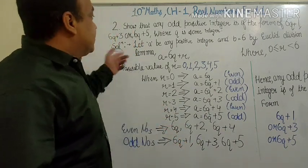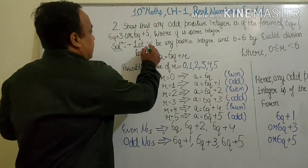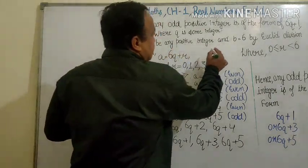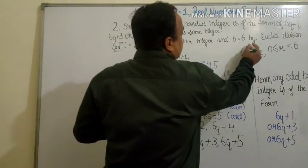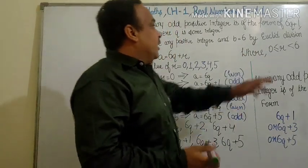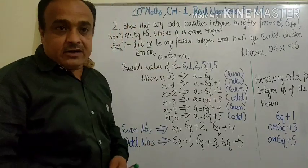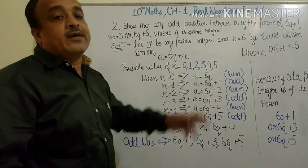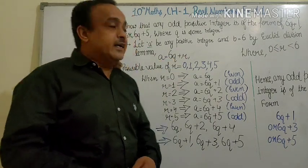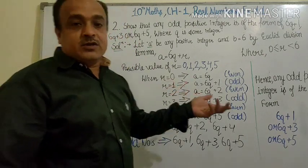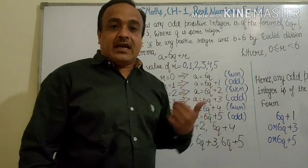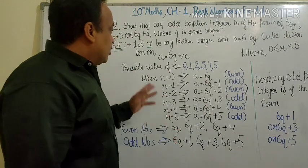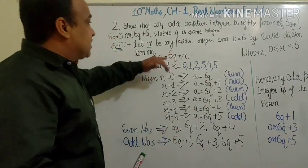a is equal to 6q plus r, where r is the remainder that lies between 0 to 6, that is 0 ≤ r < 6. When any number is divided by 6, the possible remainders are 0, 1, 2, 3, 4, or 5.